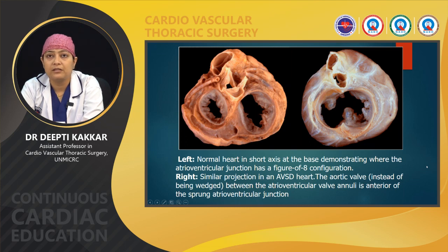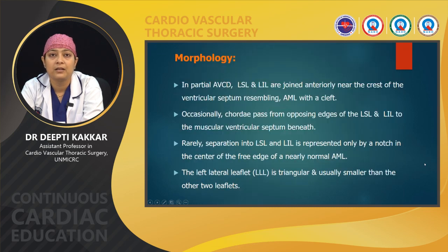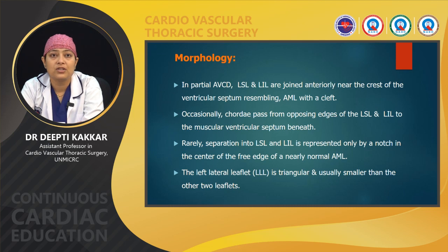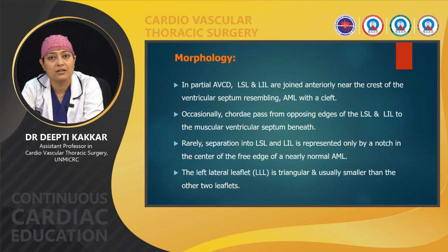In partial AVCD, the left superior and inferior bridging leaflets are joined anteriorly near the crest of the ventricular septum, resembling a cleft in the anterior mitral leaflet. Occasionally chordae pass from the opposing edges of the superior and inferior bridging leaflets to the muscular septum beneath. Rarely, the separation is represented only by a notch in the center of the free edge of the nearly normal anterior mitral leaflet. The left lateral leaflet is usually triangular and smaller than the other two leaflets.